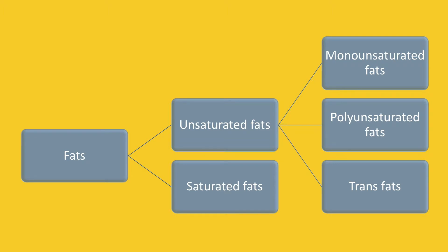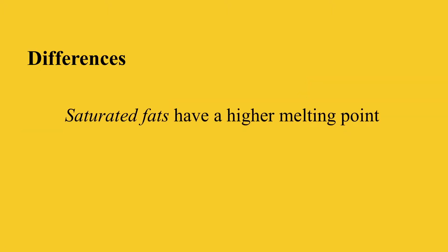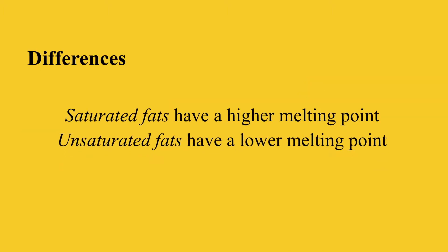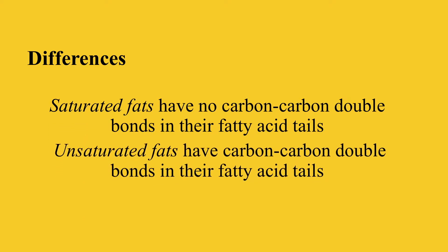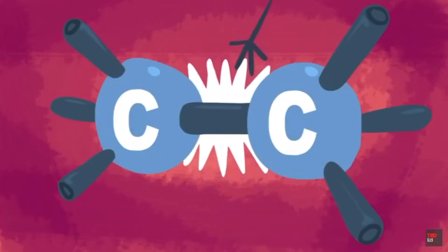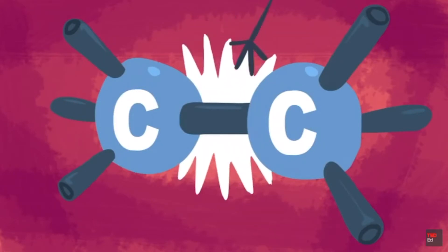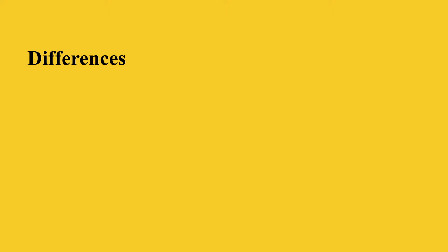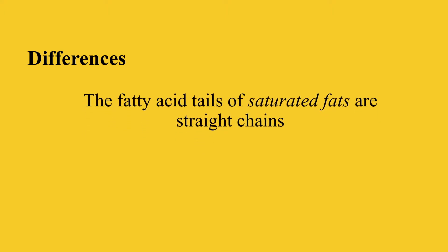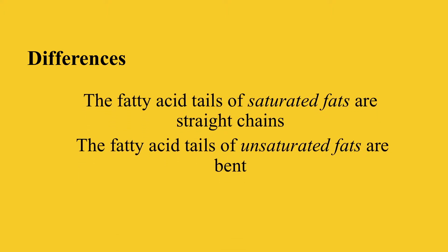Saturated fats have a higher melting point, while unsaturated fats have a lower melting point. Saturated fats do not have carbon-carbon double bonds in their fatty acid tails, while unsaturated fats do have carbon-carbon double bonds. Therefore, the fatty acid tails of saturated fats are straight, while the fatty acid tails of unsaturated fats are bent.